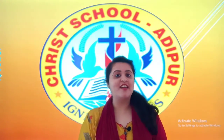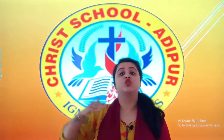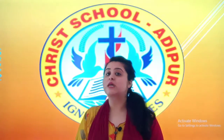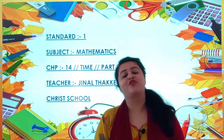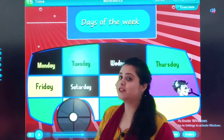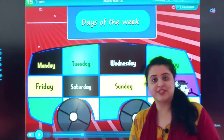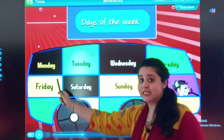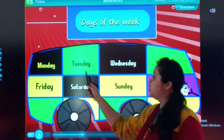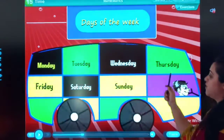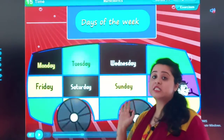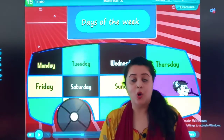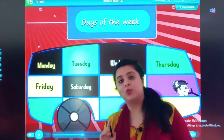So today, what time is it? Let's have a recall. Monday is the first day of the week, then Tuesday, Wednesday, Thursday, Friday, Saturday and Sunday. Sunday is the last day of the week. In all, there are 7 days in a week.